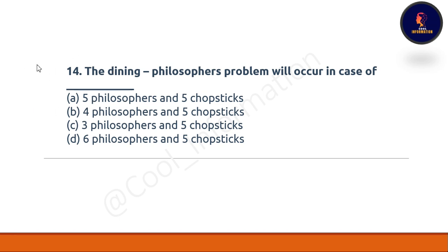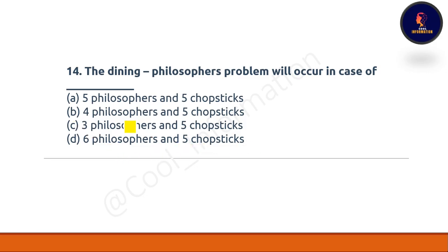Question 14: this is a very important question. The dining philosopher problem will occur in case of — Option A: five philosophers and five chopsticks. Option B: four philosophers and five chopsticks. Option C: three philosophers and five chopsticks. Option D: six philosophers and five chopsticks. The correct option is A — five philosophers and five chopsticks.